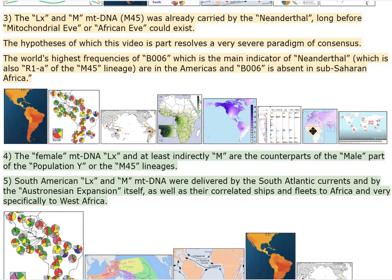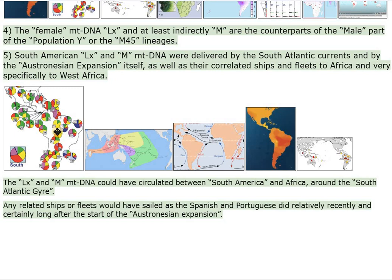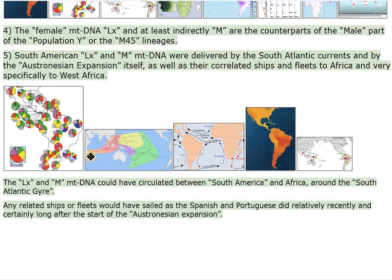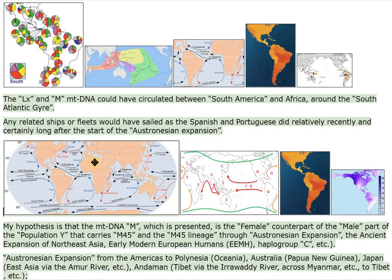The female mtDNA LX and at least indirectly M are the counterparts of the male part of population Y, or the M45 lineages. South American LX and M mtDNA were delivered by the South Atlantic currents and by the Austronesian expansion itself, as well as their correlated ships and fleets, to Africa and very specifically to West Africa. LX and M mtDNA could have circulated between South America and Africa around the South Atlantic gyre.